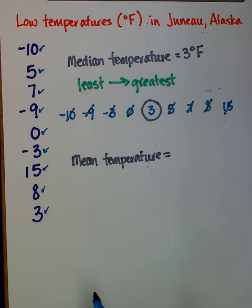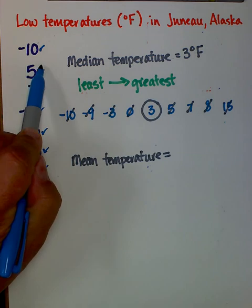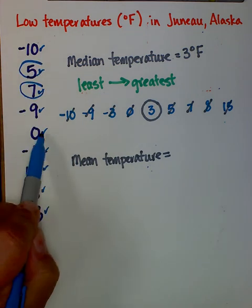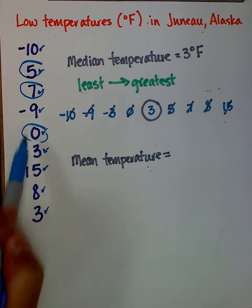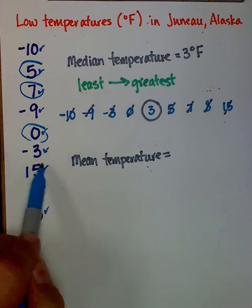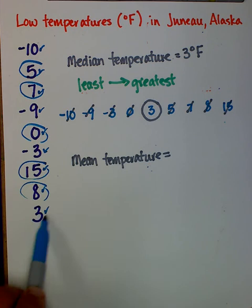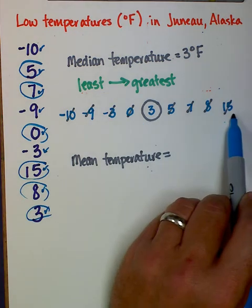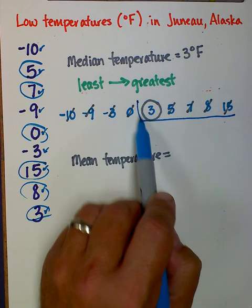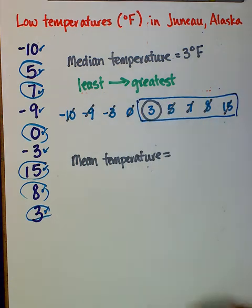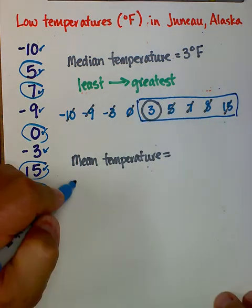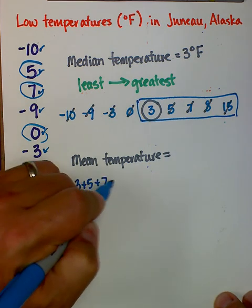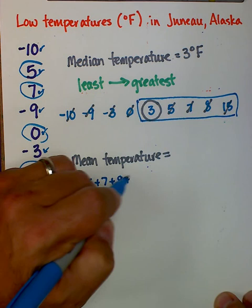So I have a positive temperature of 5, 7, 0 - that's really neither positive nor negative so I can just leave that alone - 15, 8, and 3. They're already here too, so I need to find the sum of 3 plus 5 plus 7 plus 8 plus 15.